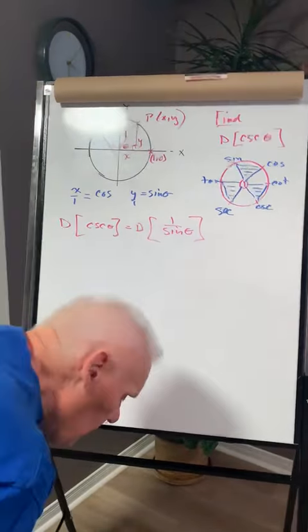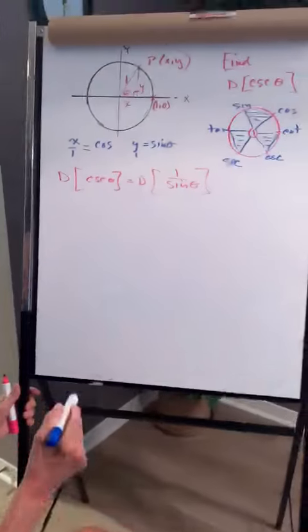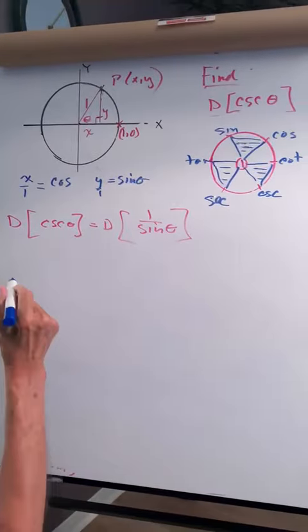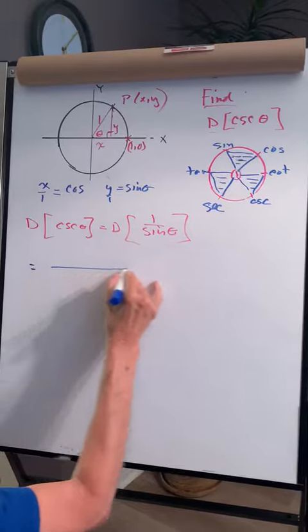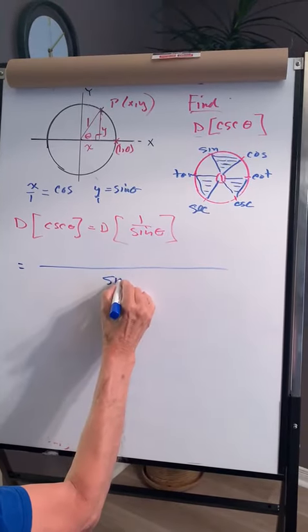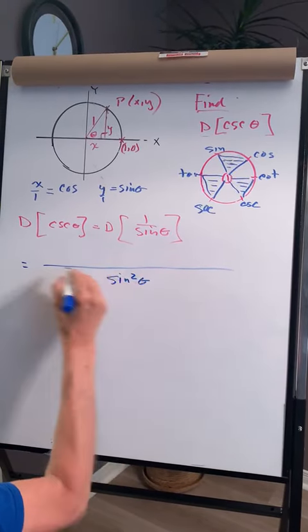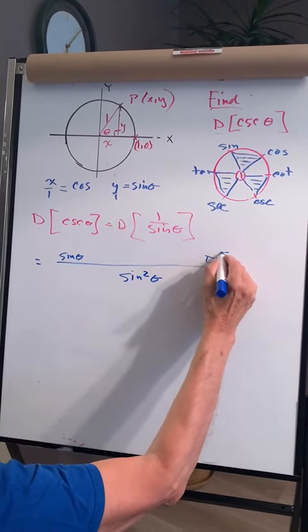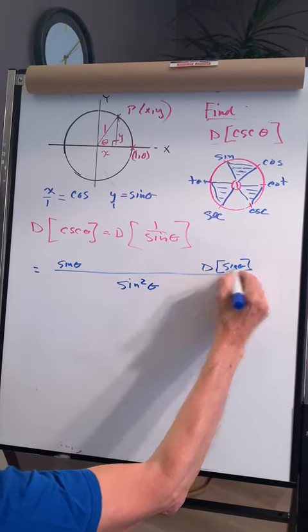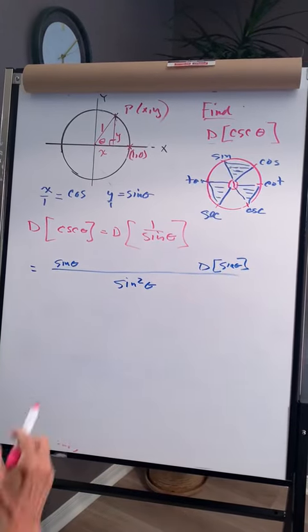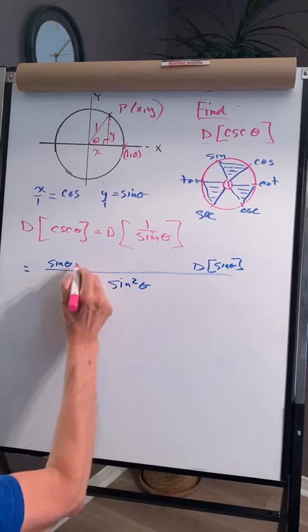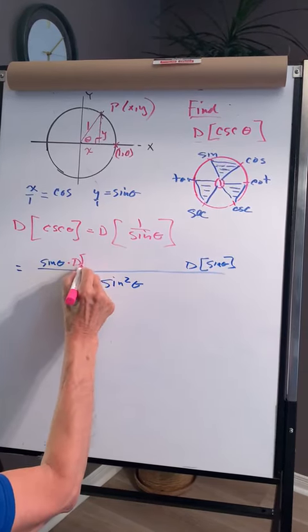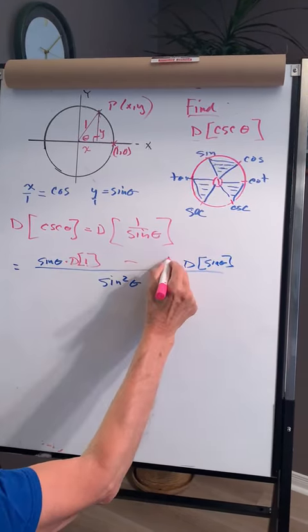Find the derivative of cosec. Using the quotient rule, that's going to look like this: sine squared theta in the denominator, and in the numerator, sine theta times the derivative of 1 minus 1 times the derivative of sine theta.